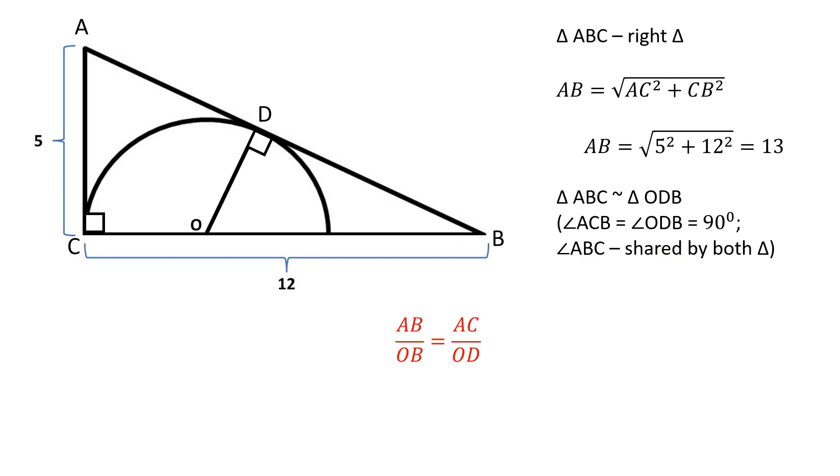In similar triangles, the corresponding sides are proportional. Therefore, AB over OB is equal to AC over OD.